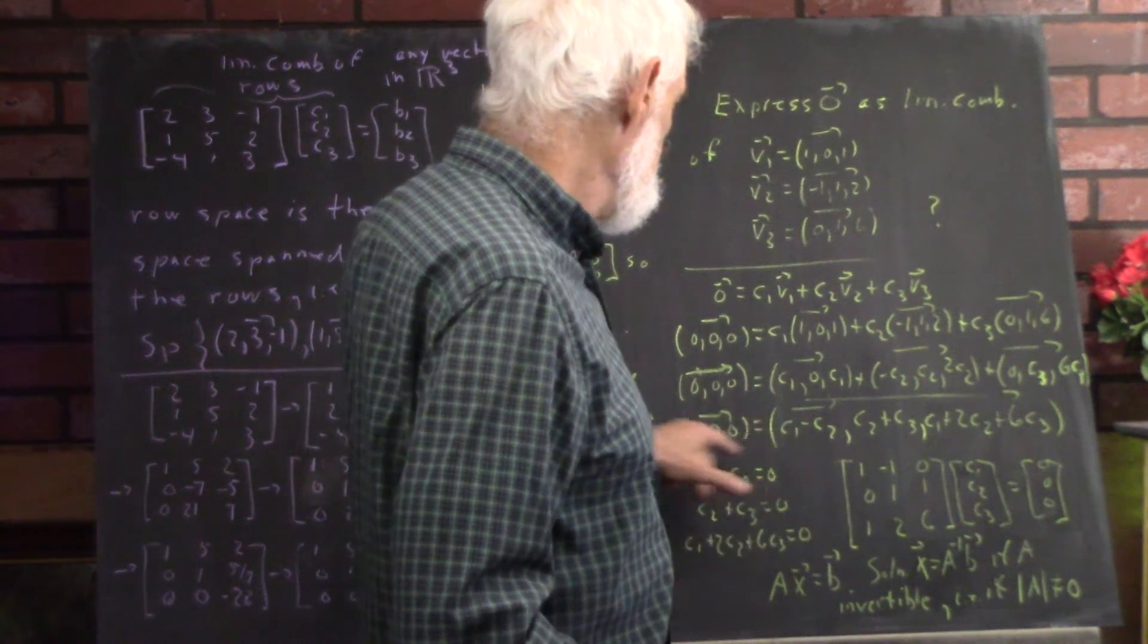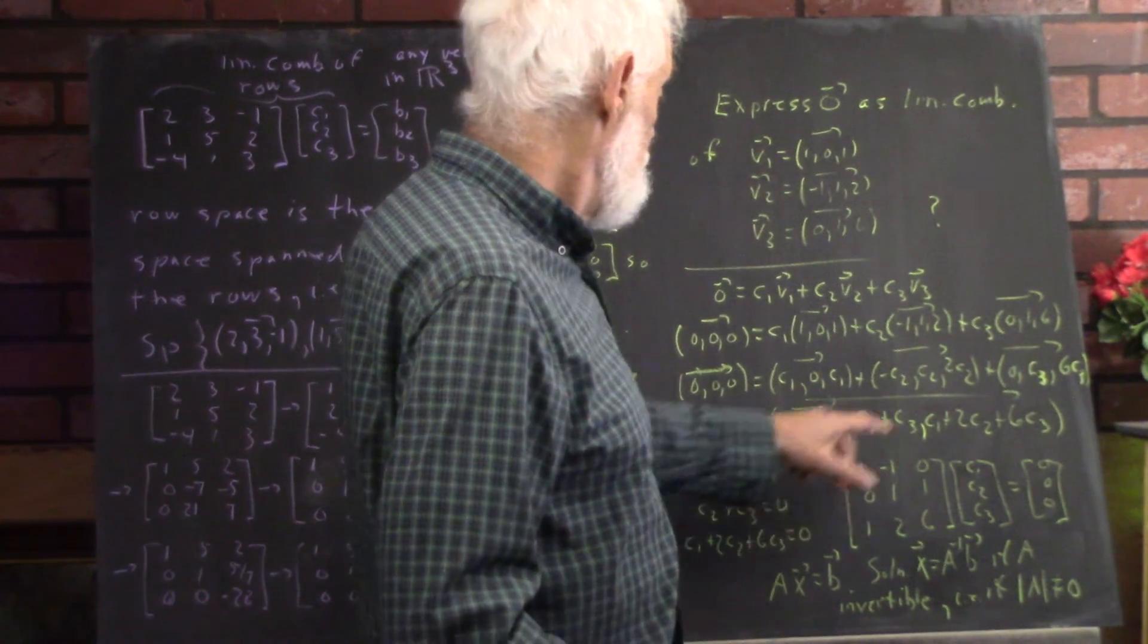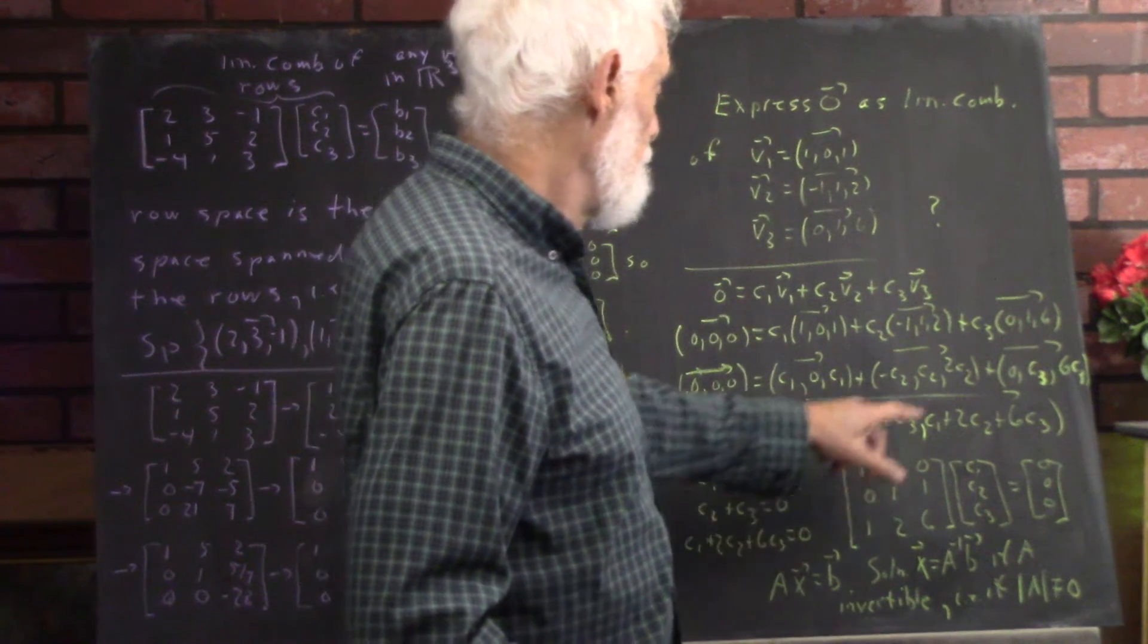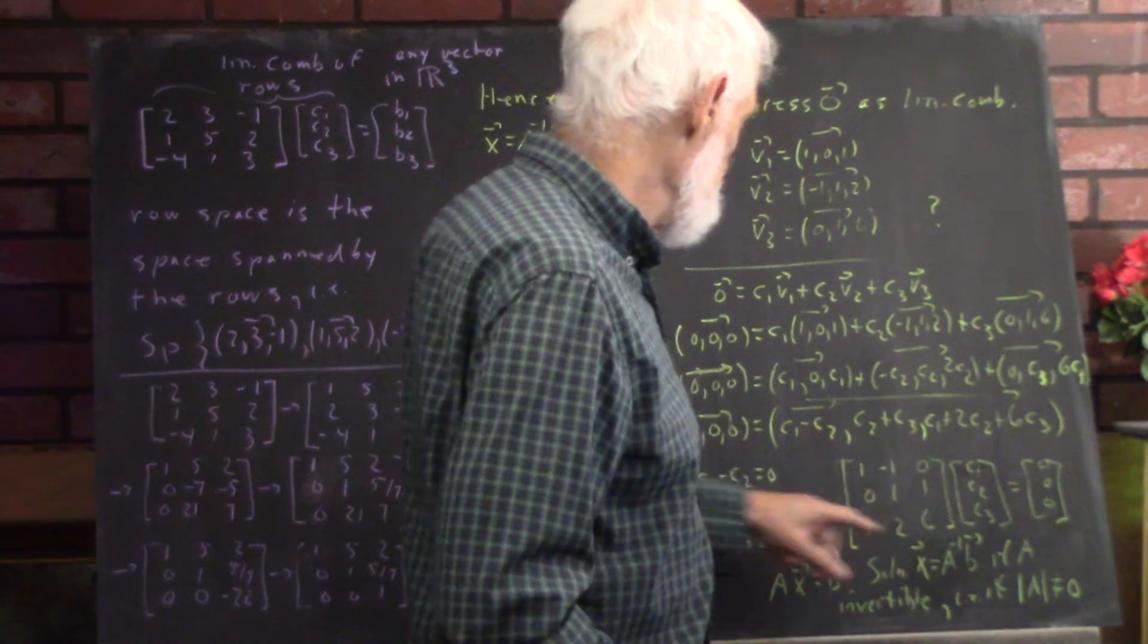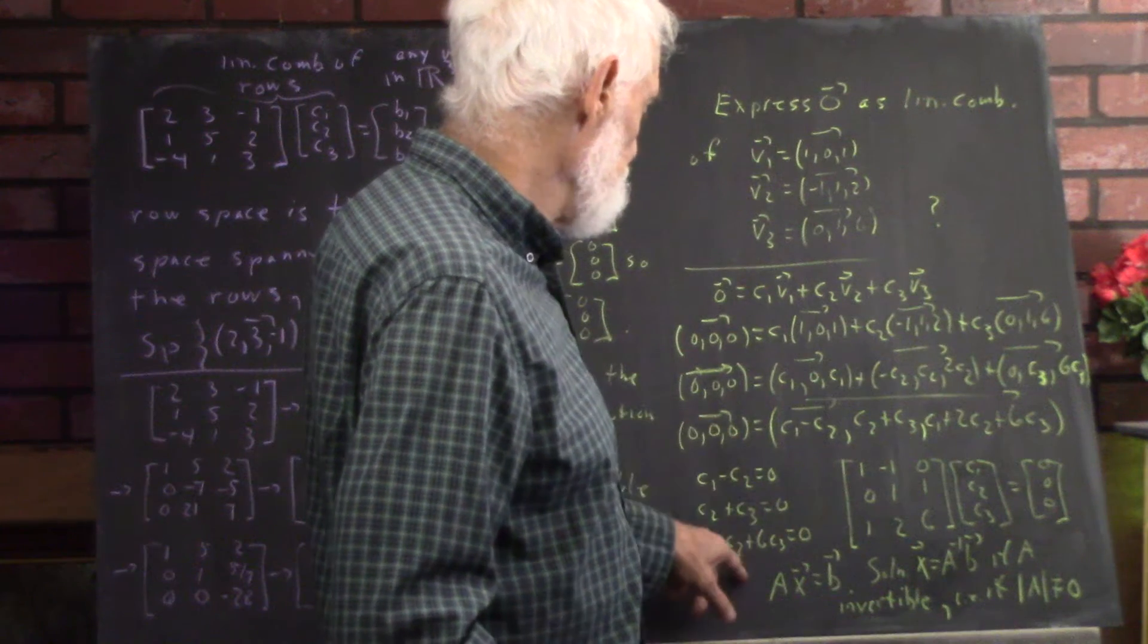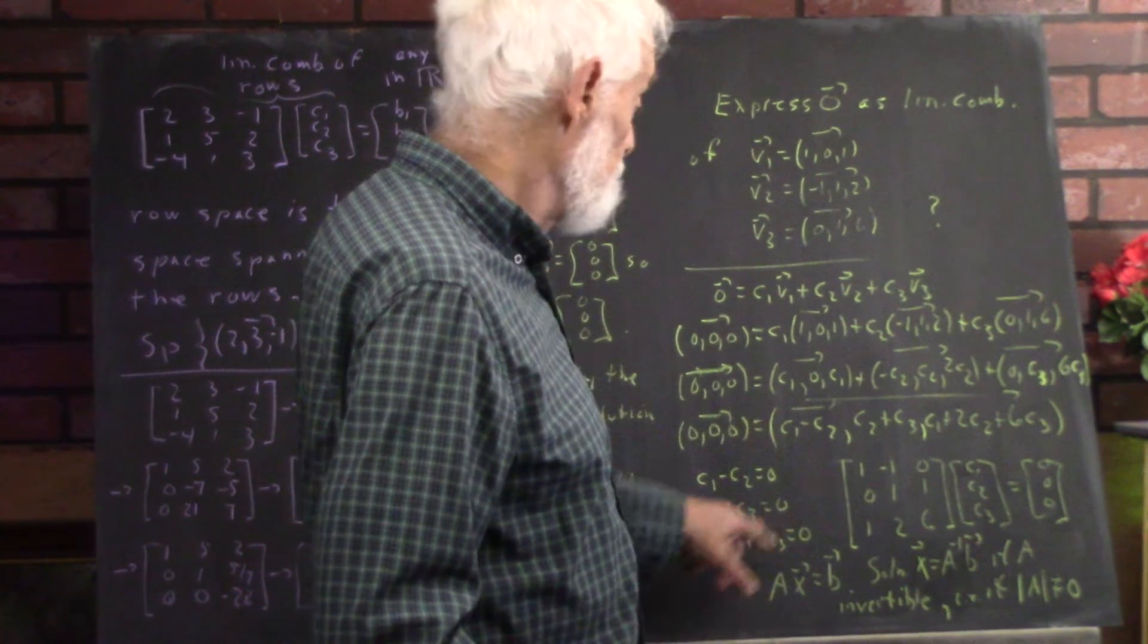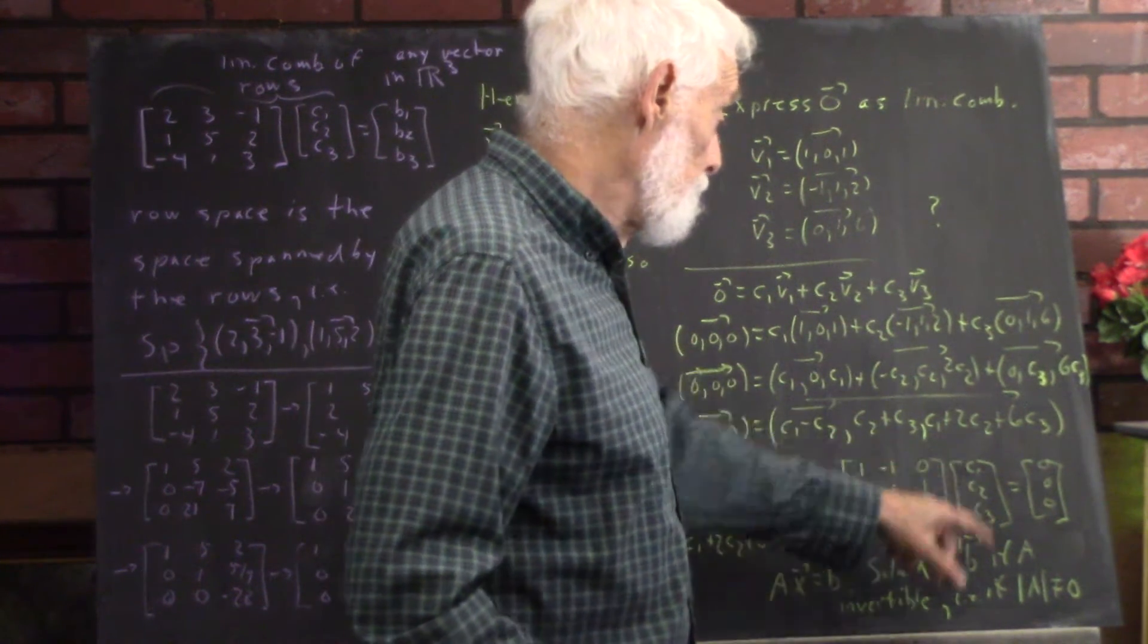C1 minus C2 has to be zero, C2 plus C3 has to be zero, C1 plus 2C2 plus 6C3 has to be zero. So we get these three equations which we translate to a matrix equation.